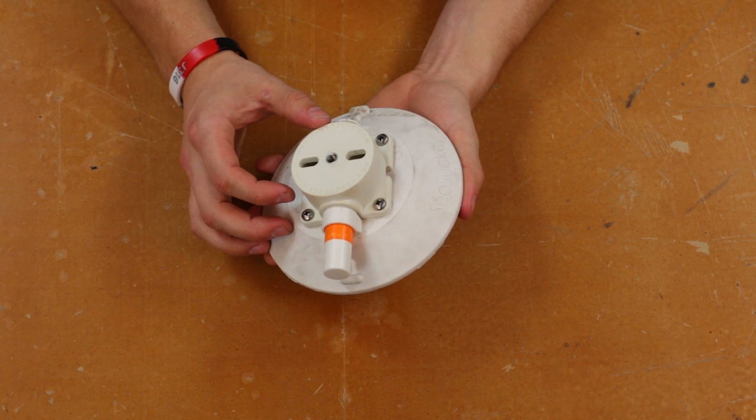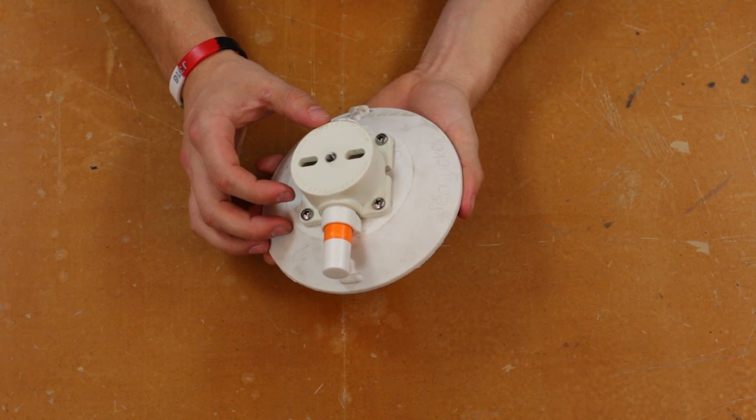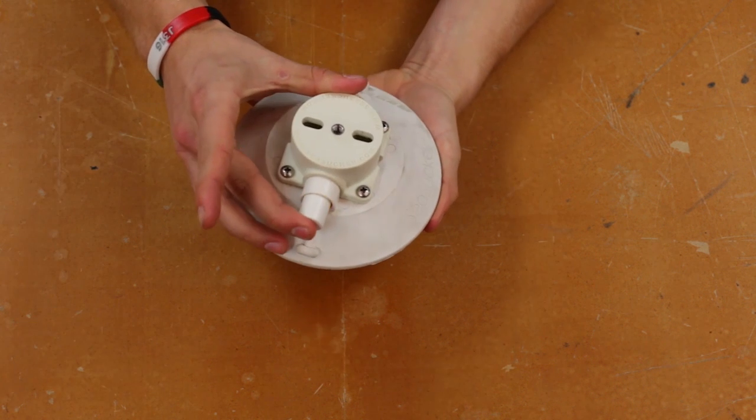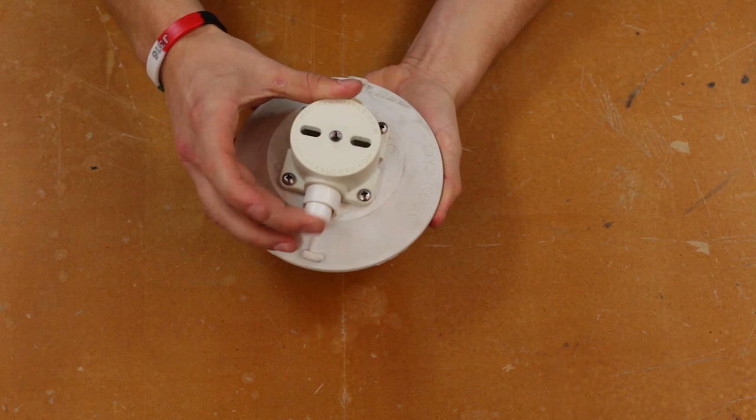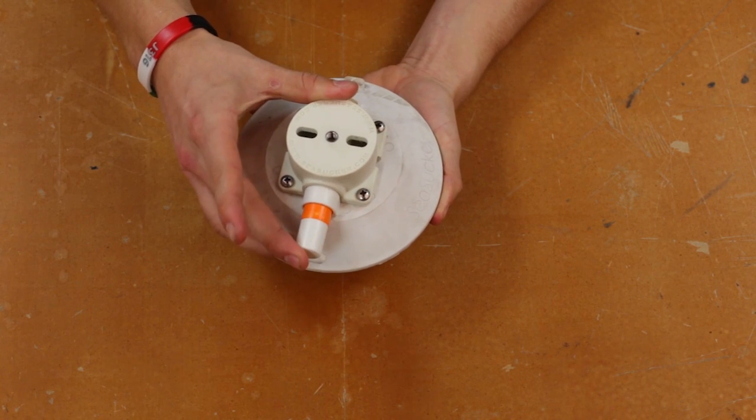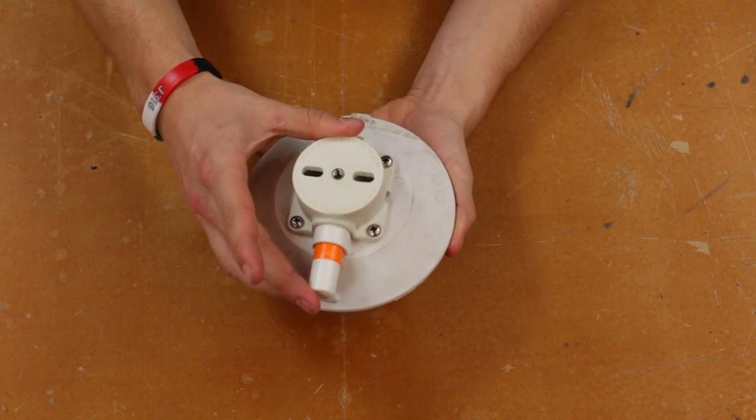You should do regular care and maintenance of each of your Seasucker vacuum mounts to keep them in top condition. Also, if you notice that the indicator band is starting to show faster than normal, or the pumping mechanism doesn't feel as smooth as normal, let's give it a simple cleaning of the vacuum pad and the pump and a quick inspection.